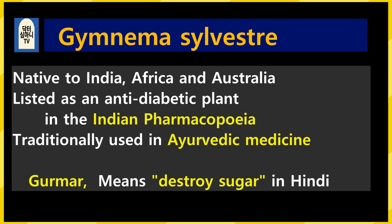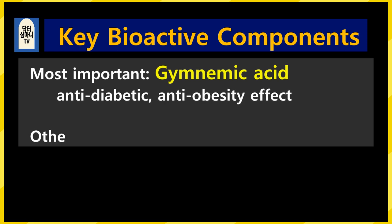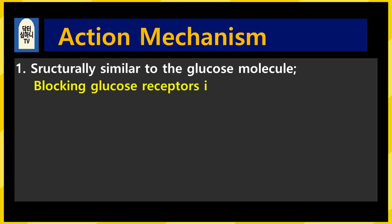The Hindi name Gurmar means 'sugar destroyer.' The name itself says: I am anti-diabetic. The most important active ingredient is gymnemic acid, which has anti-diabetic and anti-obesity effects.